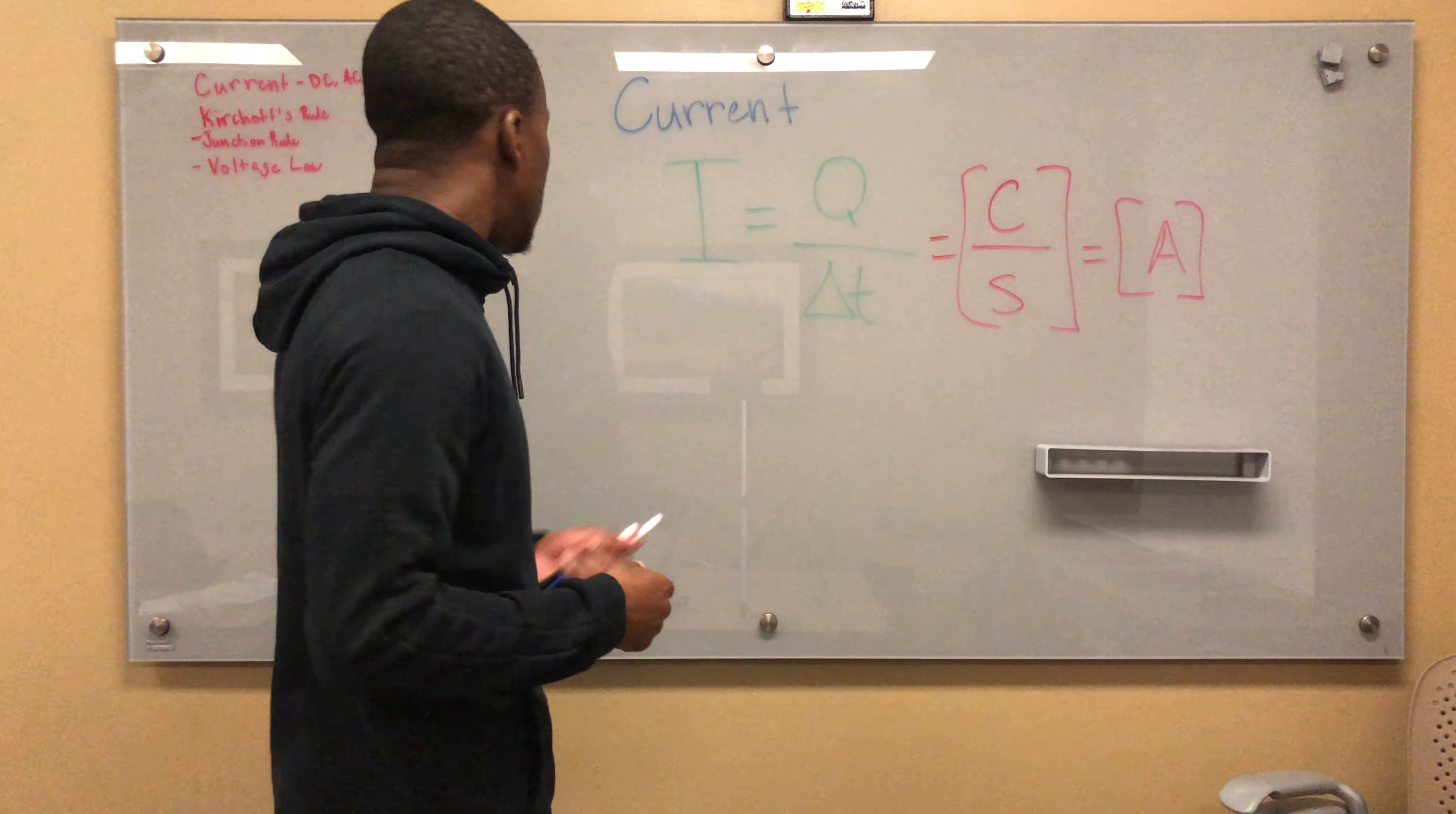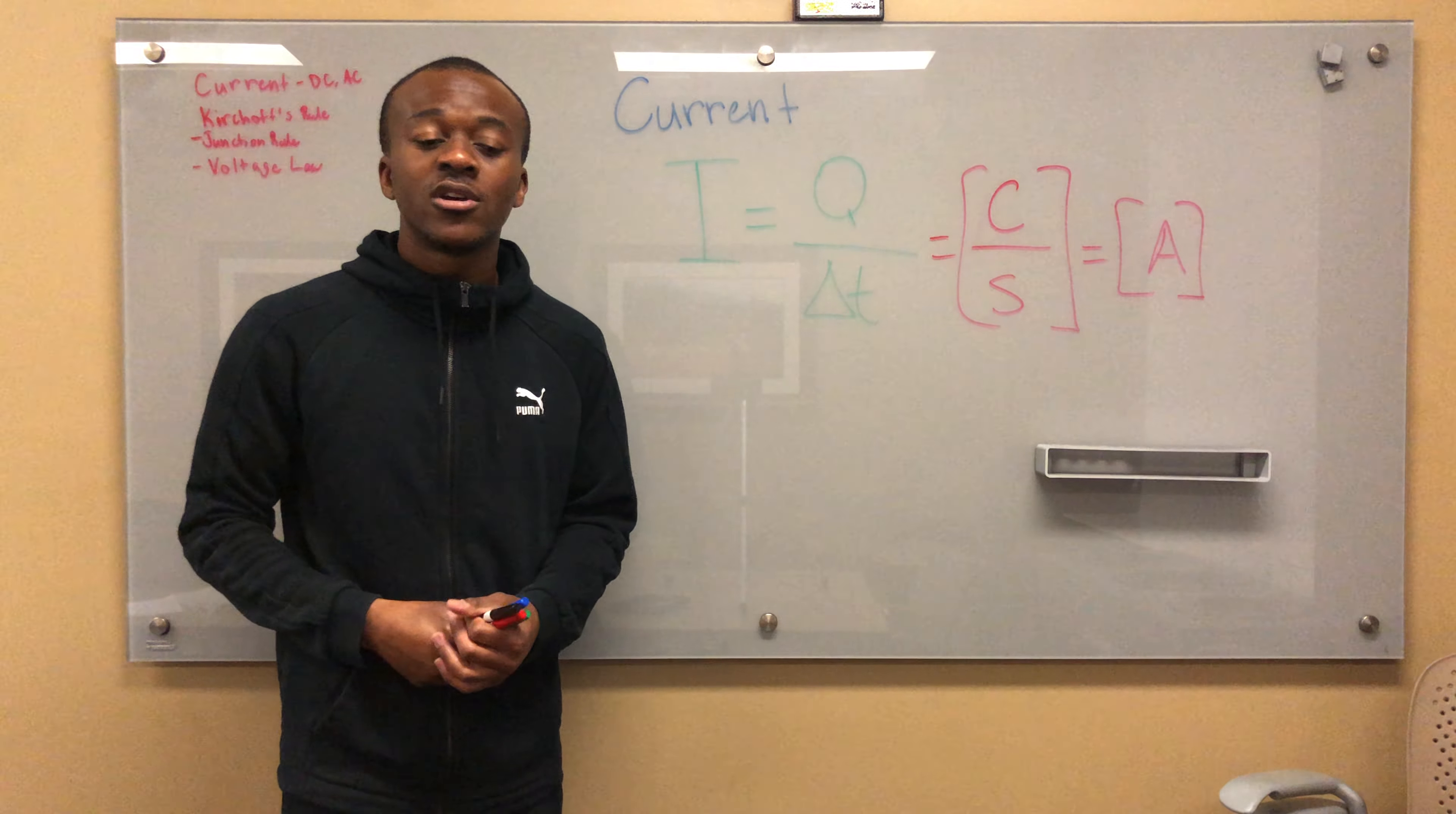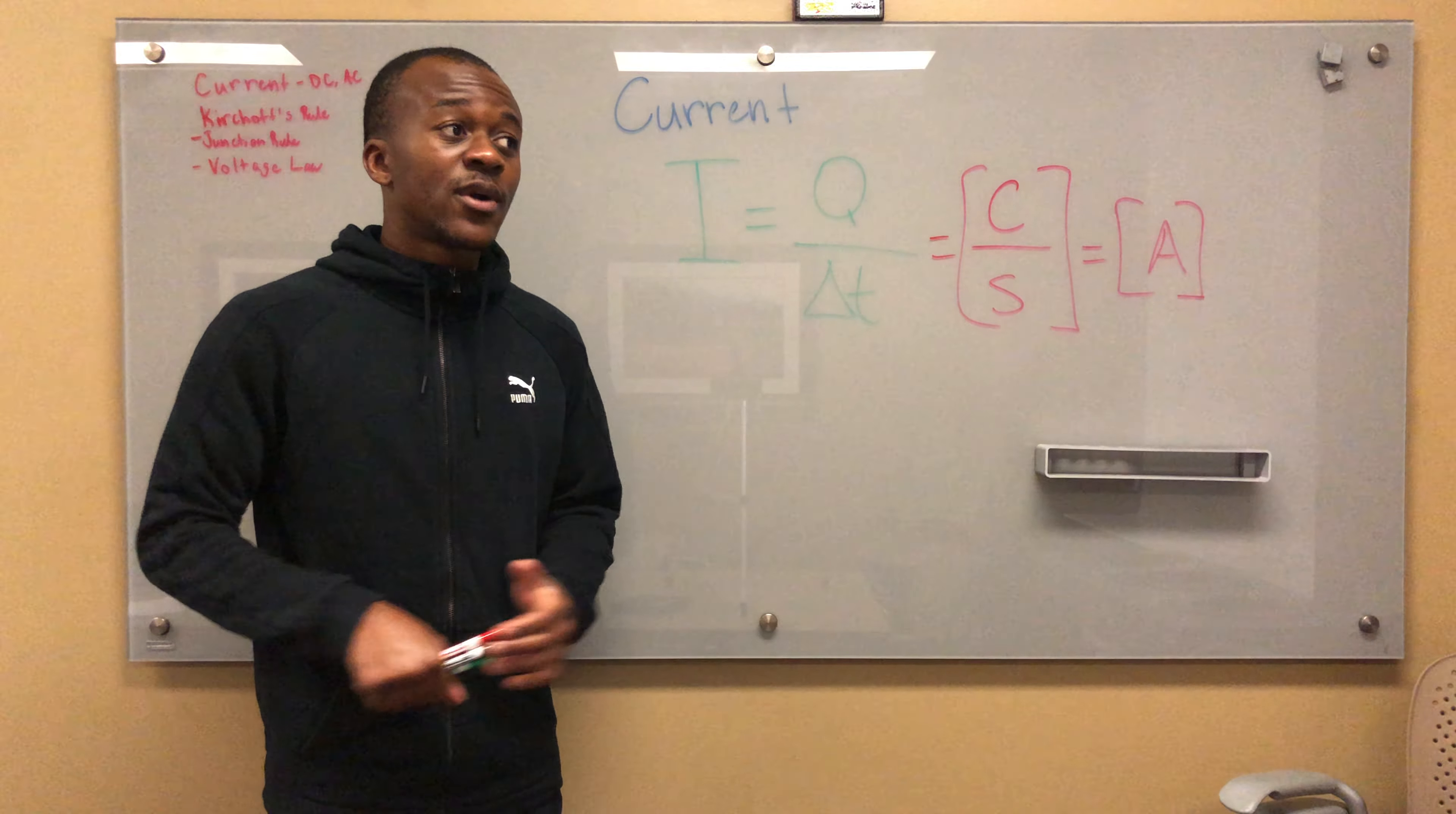Now there's something you need to know about direct current versus alternating current. There are different types of current we can have. An example of direct current would be like a battery, and an example of alternating current is like the electricity that you have in your house. Direct current has flow in only one direction.